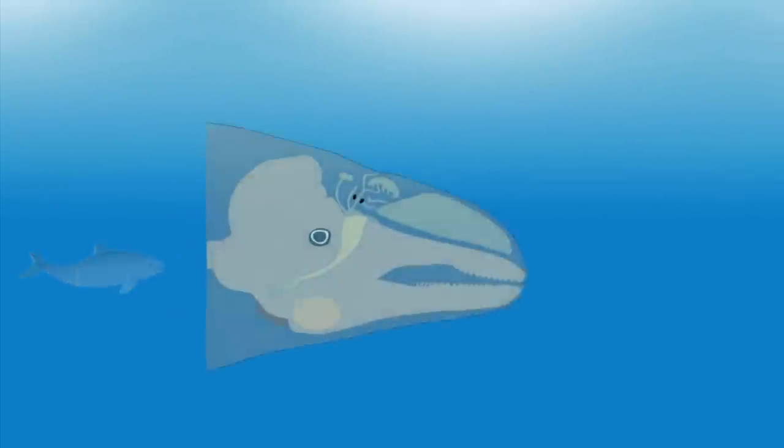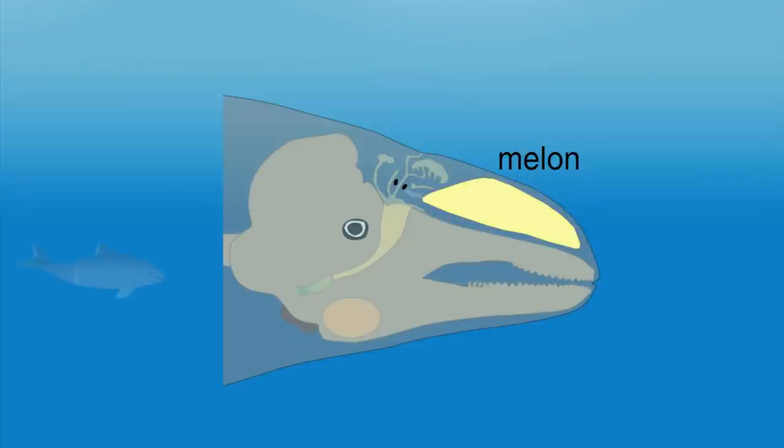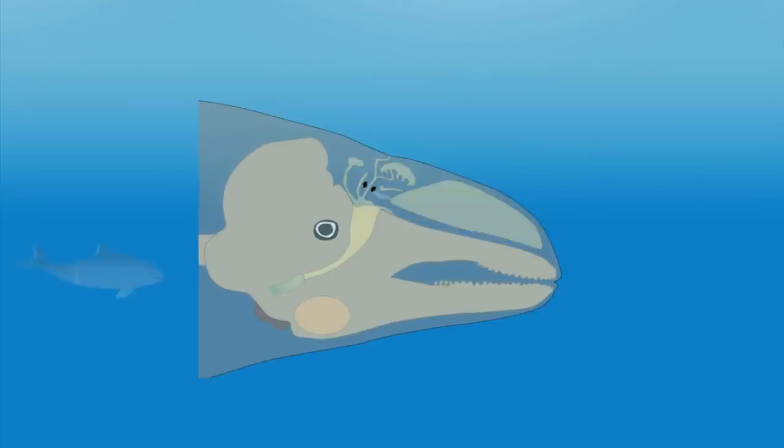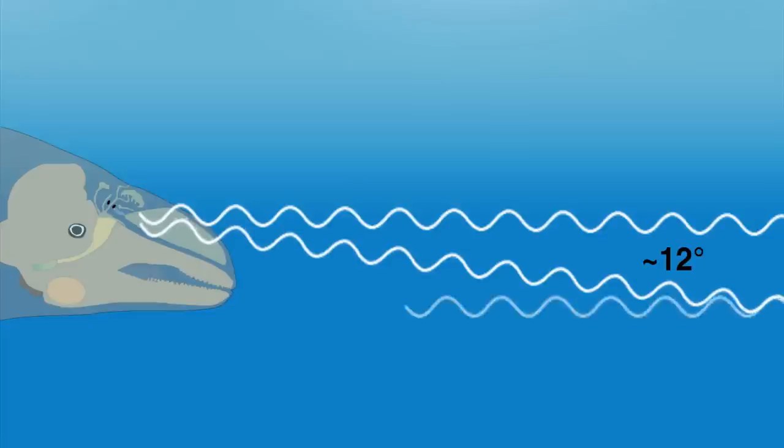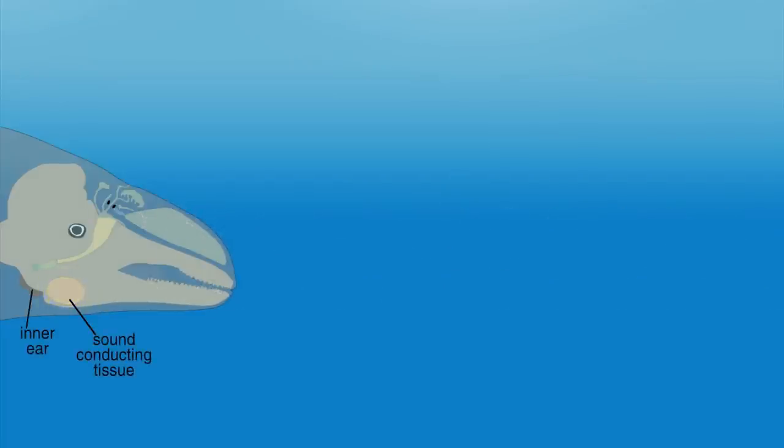Porpoise clicks are released through the fatty, roundish tissue on the front of their head called the melon. The clicks, which are focused by the melon into a narrow beam about 12 degrees wide, are released relatively slowly at first until they return an echo, signaling a nearby object.